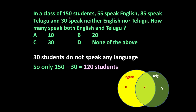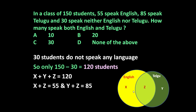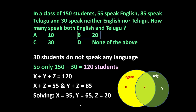30 students do not speak any language, so out of 150, only 120 students speak at least one language. We need to find Z, the students speaking both. Equations: X plus Y plus Z equals 120; X plus Z equals 55 (English speakers); Y plus Z equals 85 (Telugu speakers). Solving these gives X equals 35, Y equals 65, and Z equals 20. So 20 students speak both English and Telugu — the answer is 20.